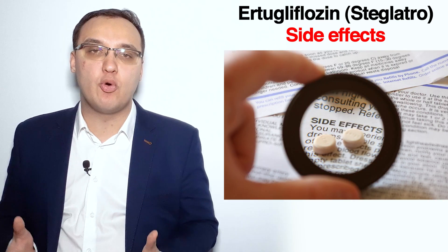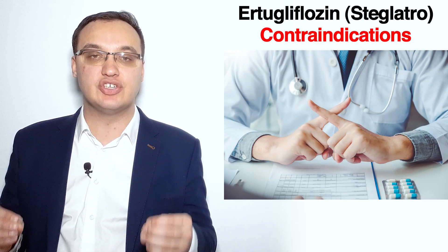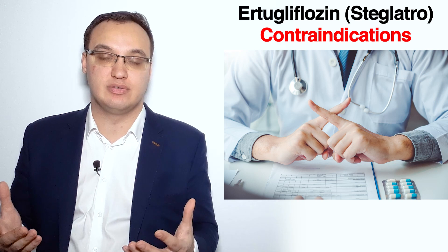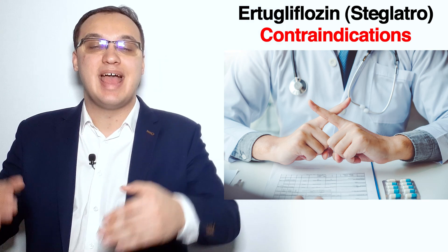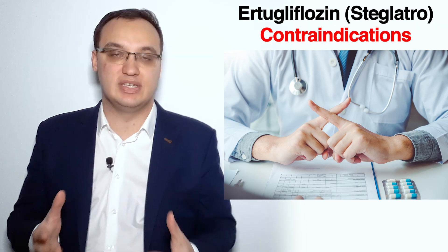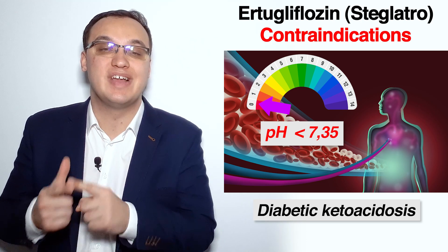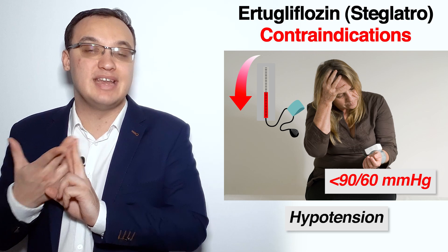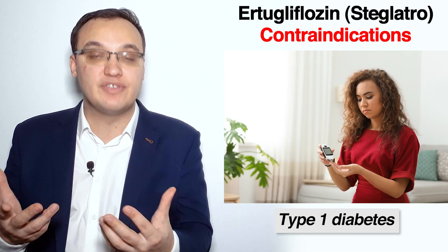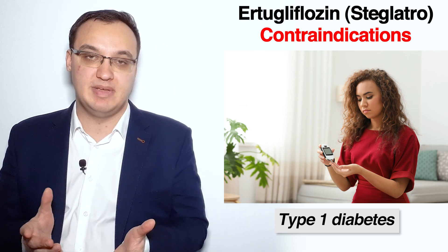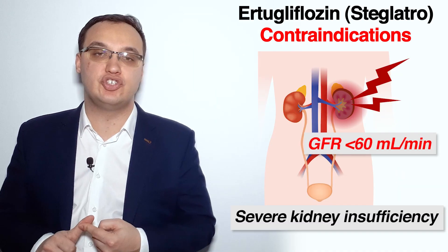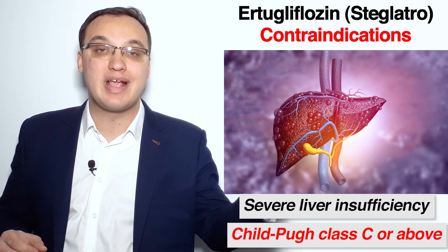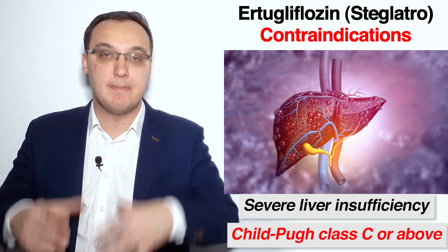Contraindications mean that we are not allowed to start Steglatro if the patient has any one of them. The contraindications are closely related to the side effects. Diabetic ketoacidosis is a contraindication, as is hypotension — blood pressure less than 90/60. Type 1 diabetes is also a contraindication; Steglatro must only be given to patients with type 2 diabetes. Additional contraindications are severe kidney insufficiency with GFR less than 60 milliliters per minute, severe heart insufficiency, and severe liver insufficiency with Child-Pugh class C or above.